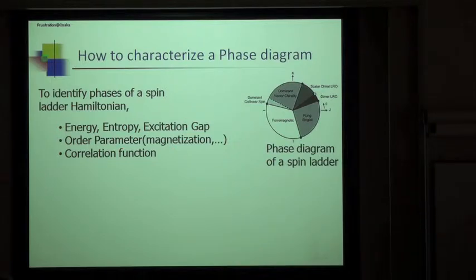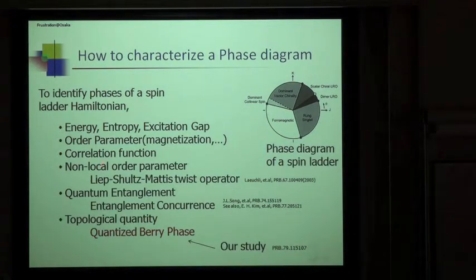And the order parameters like magnetization and the correlation function. In addition, you can use such kind of new order parameters. The first one is a non-local order parameter like Lieb-Schultz-Mattis twist operator and quantum entanglement and quantum topological quantity, which is our work.